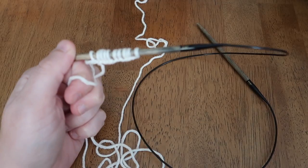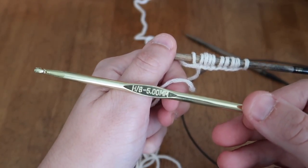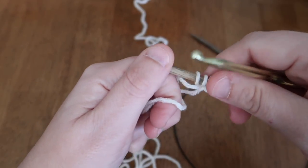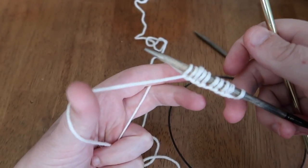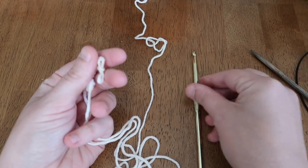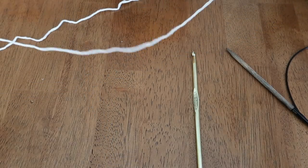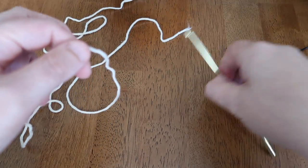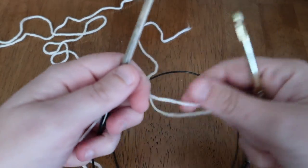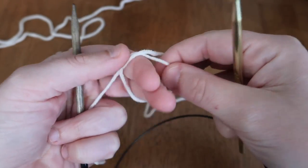The next cast on I'm going to show you is actually using a familiar tool, which is a crochet hook. You can do a crochet or knit on cast on, and it starts similarly to your crochet chain where you're starting with a slip knot. You'll need your yarn, your crochet hook, and your knitting needles, all appropriately sized for your yarn that you're casting on with. Here I'm going to create my slip knot.